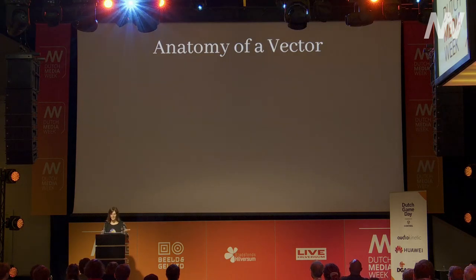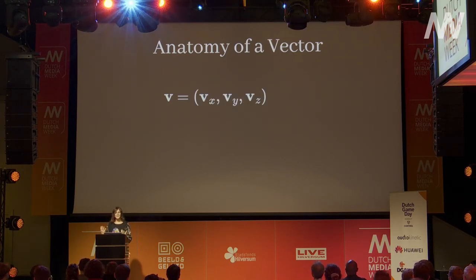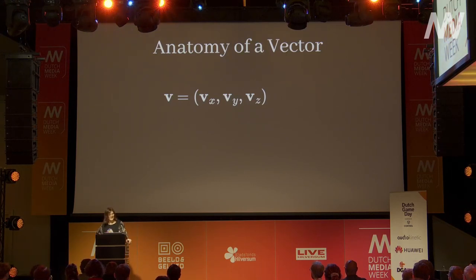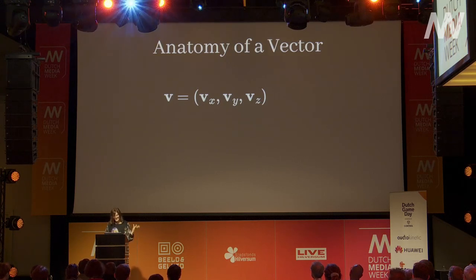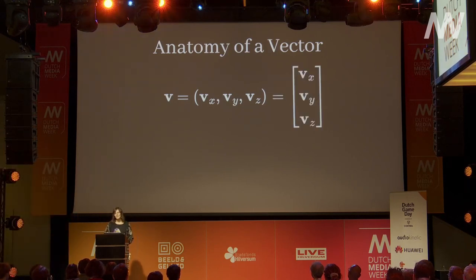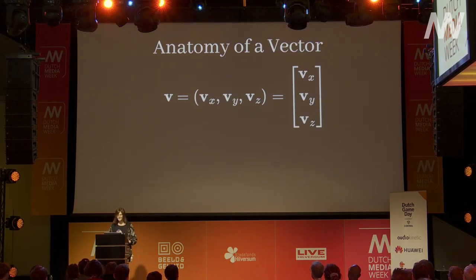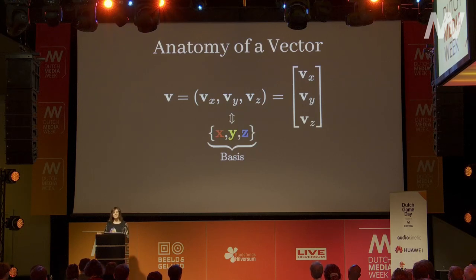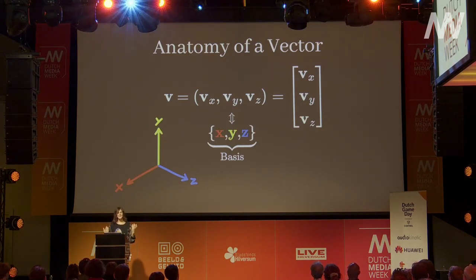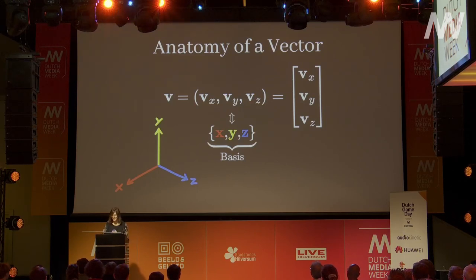The anatomy of a vector: we usually write it in bold letters — vector V. It has three components if it's a 3D vector: the X component, the Y component, and the Z component, usually written in parentheses. You can also write it as a column matrix, which can be useful for writing longer expressions per component. This presumes a basis — the basis vectors of our coordinate system. We have an X axis, Y axis, and Z axis, all orthogonal to each other with a length of one. They're orthonormal.